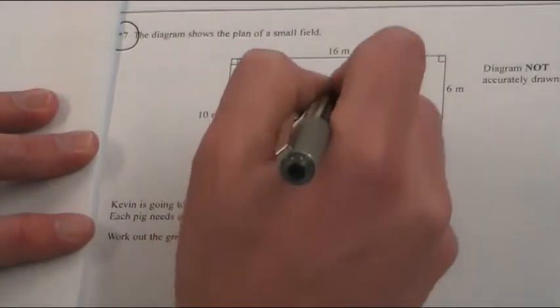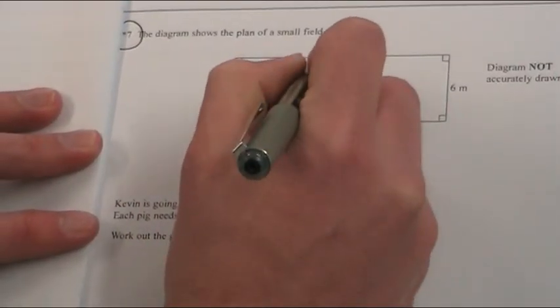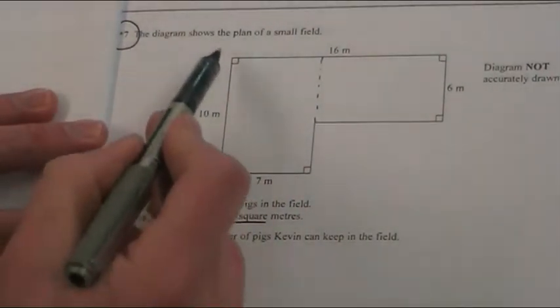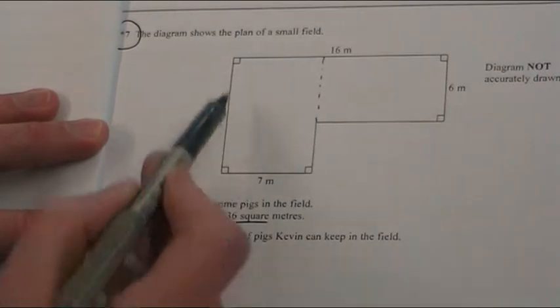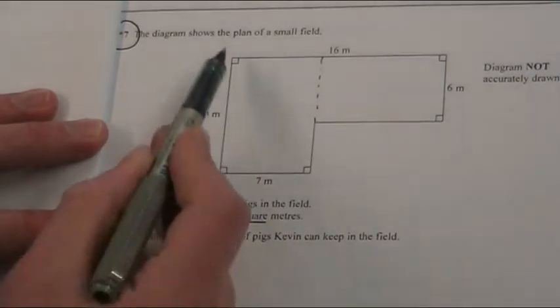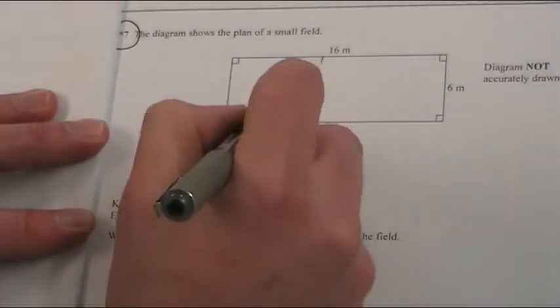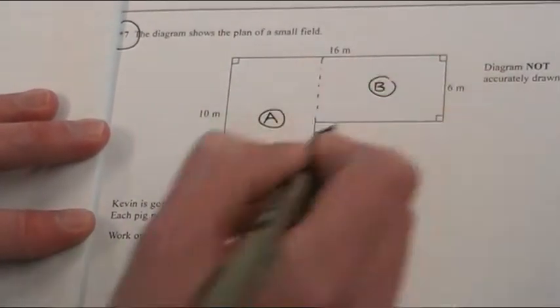I'm going to split it up this way, purely because I don't want to times 6 by 16. So here's a rectangle, and I know the dimensions: 10 and 7. Length times width, I'll get the area. Just to make this really clear, I'm going to label this one A and this one B.